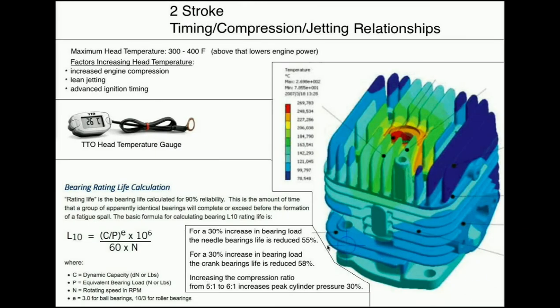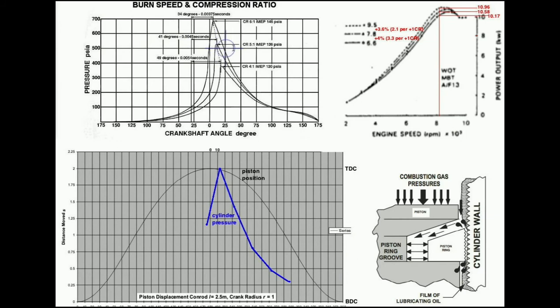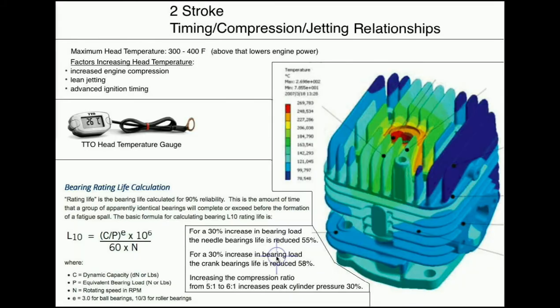So what happens as you increase the compression, you increase the load on the bearings. If you look at this formula right here, using that formula I computed for a 30% increase in bearing load, which is what you get from compression ratio of 5 to 6. That's a 30% increase in peak pressure. So a 30% increase in load reduces the needle bearing's life by 55% and the crank bearing's life by 58%.